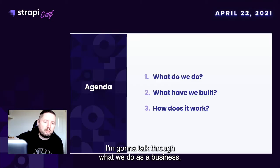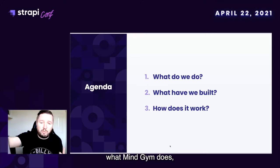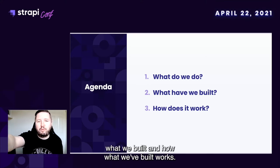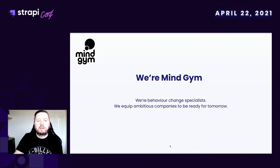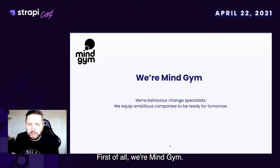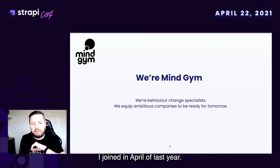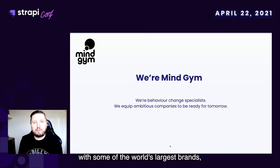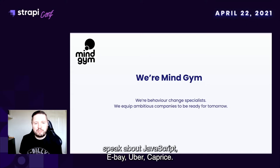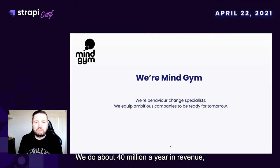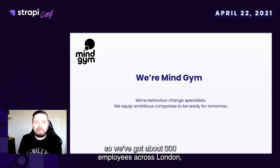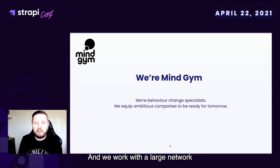I'm going to talk through what we do as a business, what MindGym does, what we've built, and how what we've built works. We're MindGym — I've been with MindGym for just over a year, joined in April of last year. As a company, we've got about 20 years of behavior change experience with some of the world's largest brands: people like Deliveroo, eBay, Uber, Cadbury's. We do about 40 million pounds a year in revenue, we've got high growth, about 300 employees across London, New York, and Singapore, and we work with a large network of external coaches as well.